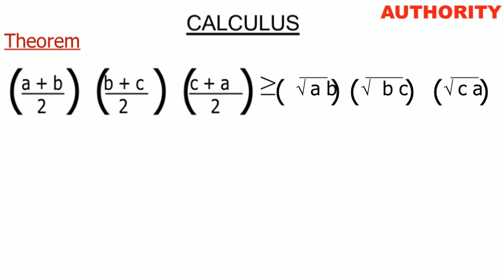Now we want to remove the 2's in the denominators under the arithmetic means. For each term, we multiply by 2 and also multiply its respective geometric mean by 2. So we multiply (a+b)/2 by 2, and multiply √(ab) by 2; similarly for (b+c)/2 and (c+a)/2 with their respective geometric means.